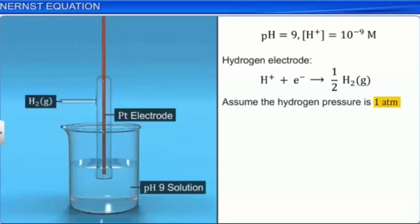From the equation, we see that 1 electron is involved. So, N equals 1. By convention, the standard potential is 0 volts.